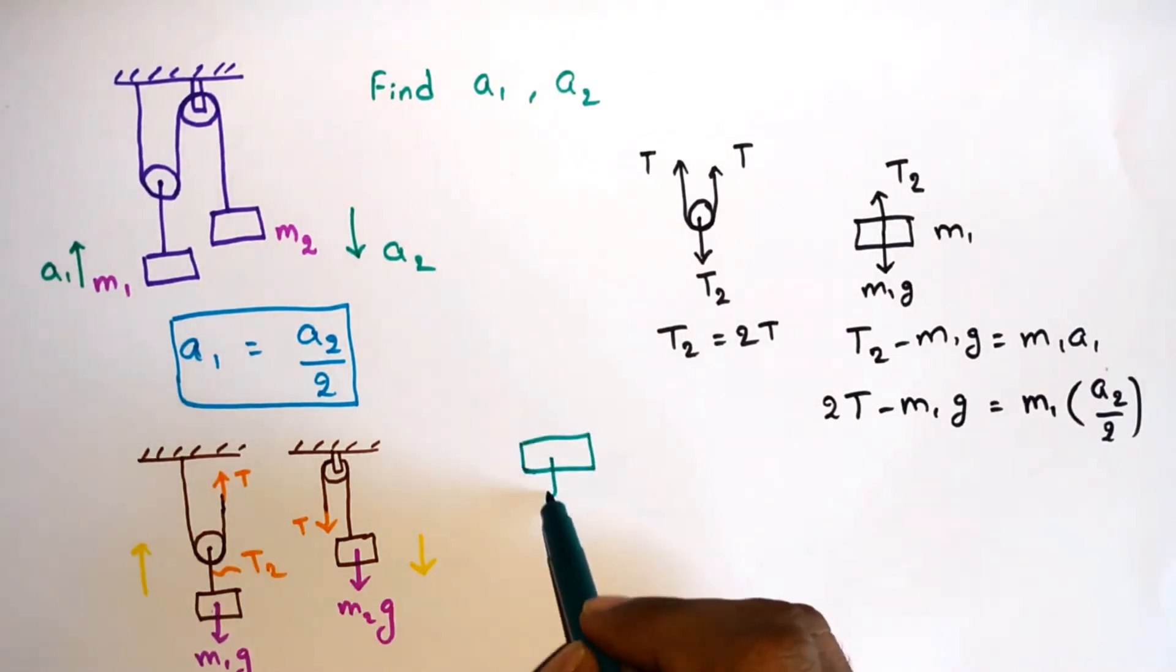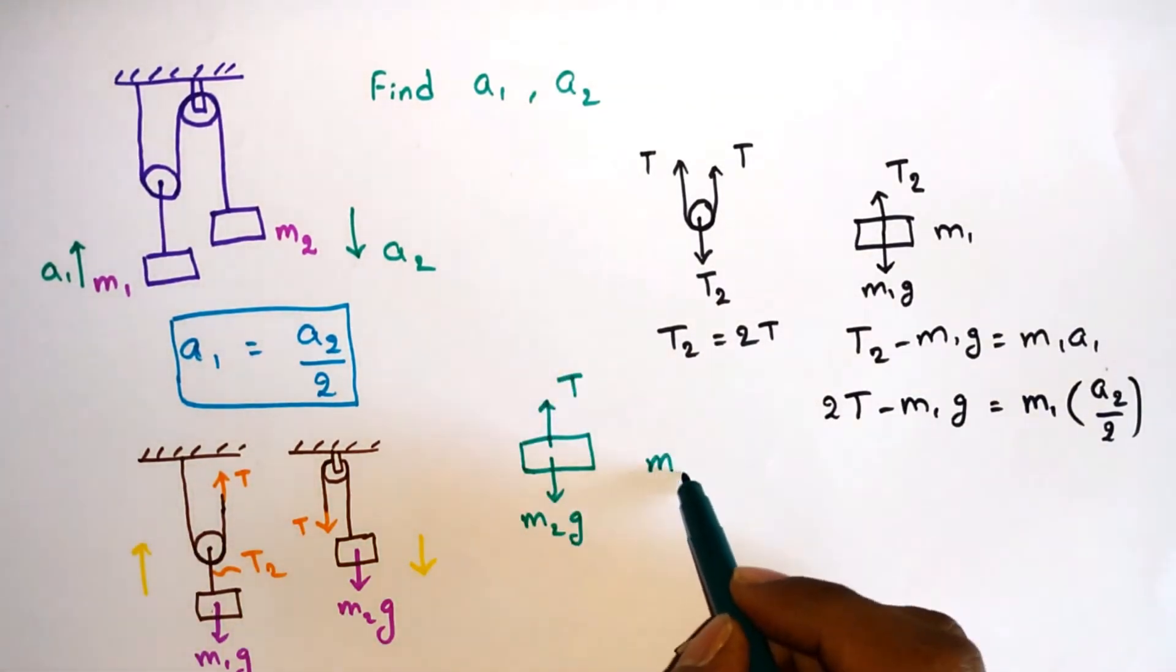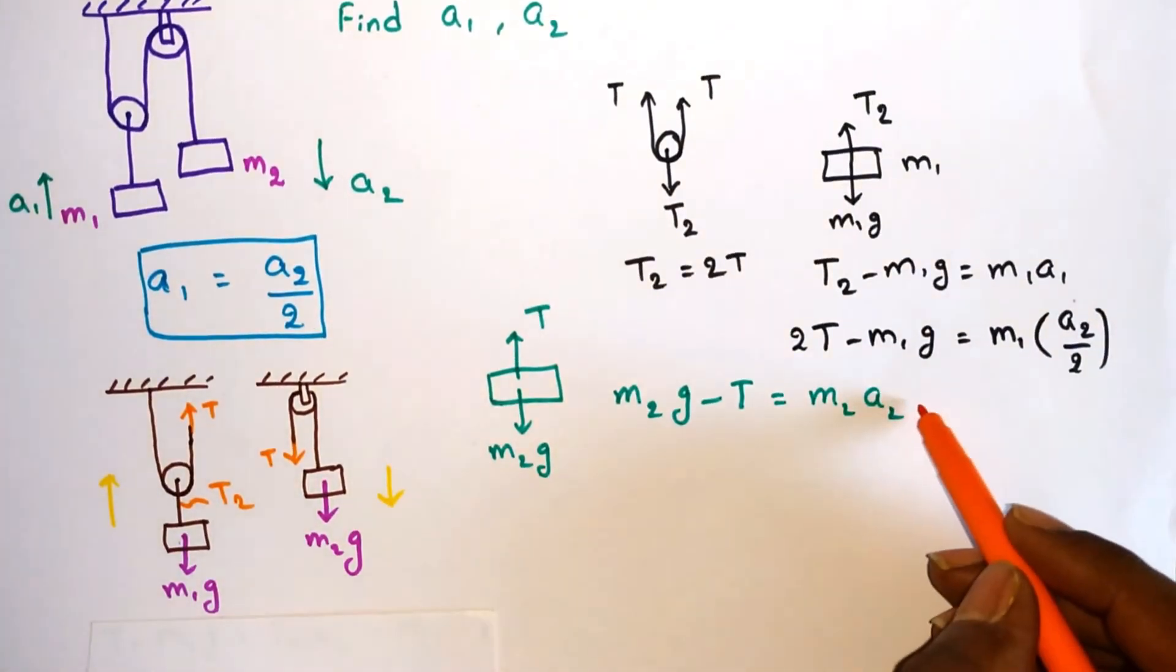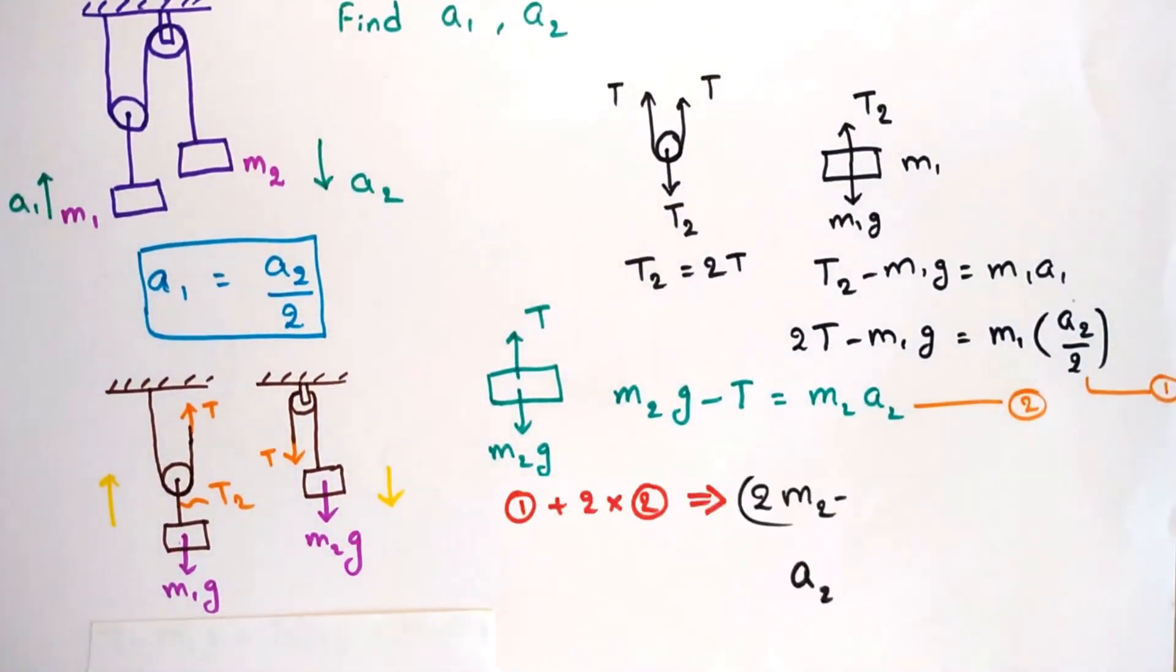From the free body diagram of m2 we can write net force as m2g - T = m2a2. Now solve these two equations to find a2. We get a2 = (2m2 - m1)/(m1/2 + 2m2)g. And a1 = a2/2.